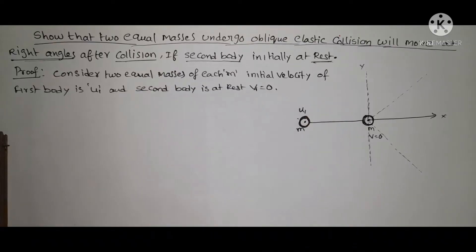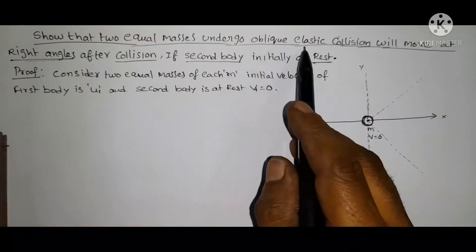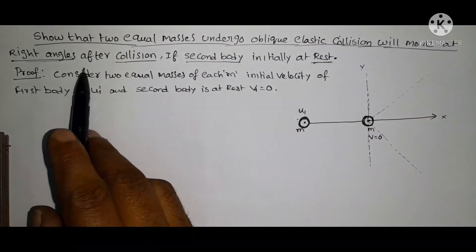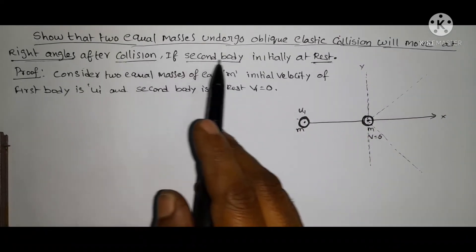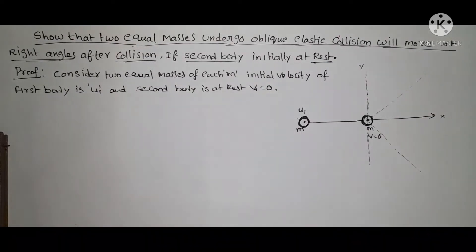Hello, good morning students. Today another important question for class 11 standard in the topic of collisions. The question is: show that two equal masses undergoing oblique elastic collision will move at right angles after collision if the second body is initially at rest. This is the condition given.